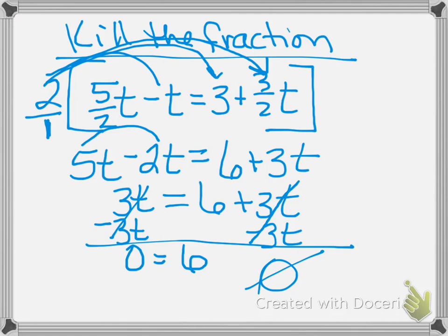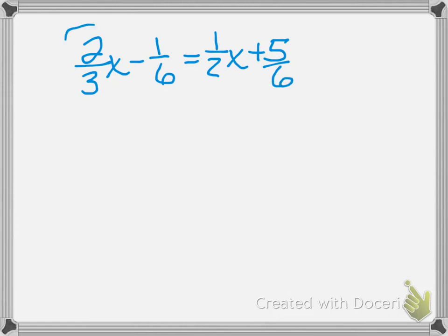I want to do one more of these kill the fractions where the denominators are different. Two-thirds X minus one-sixth equals one-half X plus five-sixths. Look at all of my denominators: three, six, and two. What is the least common denominator of three, six, and two? Six. You could use 12, but it would be better to go with the smallest one you can find because that way you're going to deal with smaller numbers. I'm going to multiply each individual term so you can see what we do here.